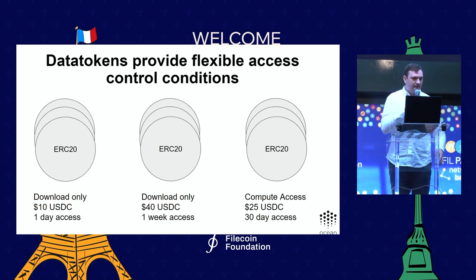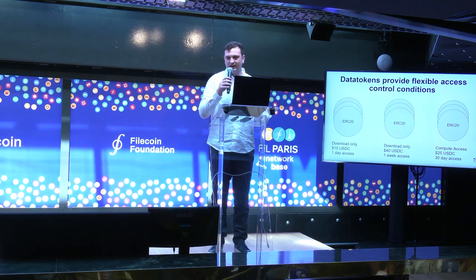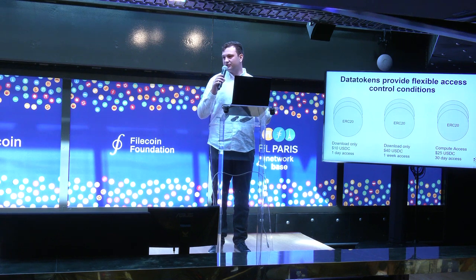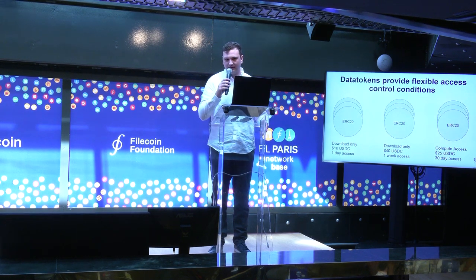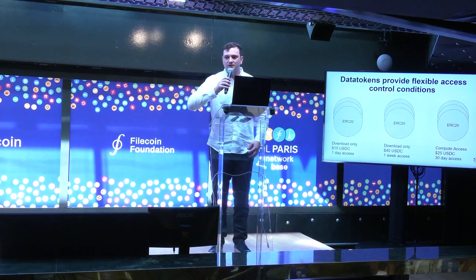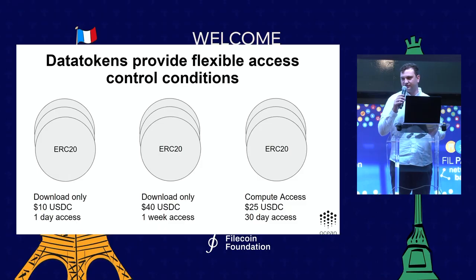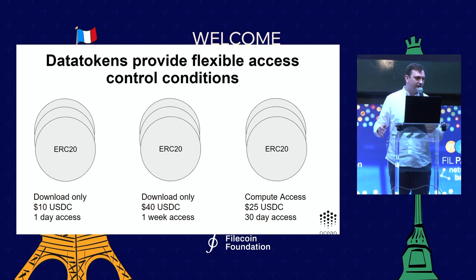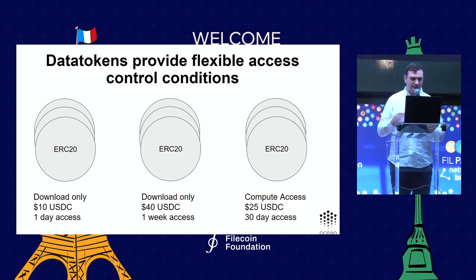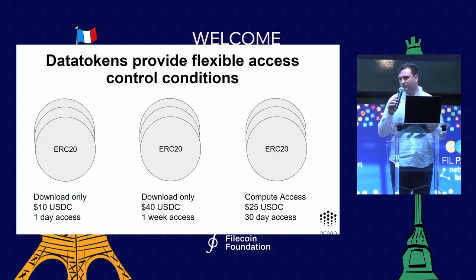Instead of allowing someone to download your asset — which, even with a license, gives you the danger of them sharing it with others — you may want to only allow people to run computations on your asset using the compute-to-data framework. With that, people are allowed to run algorithms on your asset without being able to actually download it. The ERC-20 and sub-license model really allows for flexible access control against the same base IP asset.